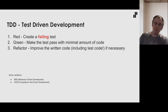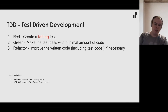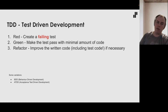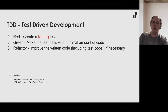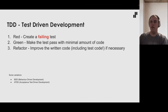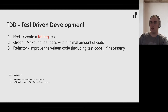That's the basic loop. After the third step, you go back to the first one: create another failing test, write some more code, then refactor if needed. That's how the ball keeps rolling.